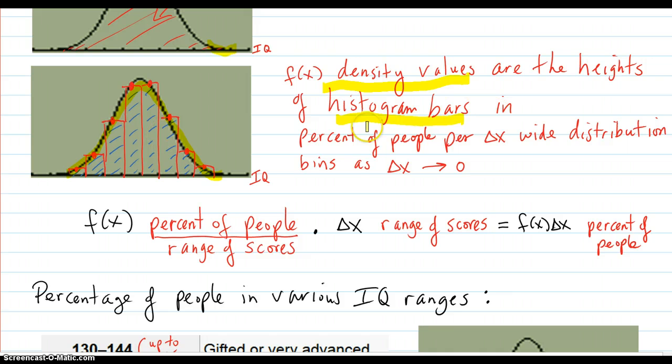In percent of people per the delta x wide distribution bins. Bins are from like here to here or here to here. The range of values. And the way you normally work a bar chart is you have your range of values and you count up how many people are in that range and divide by the total number of people and you have percent.